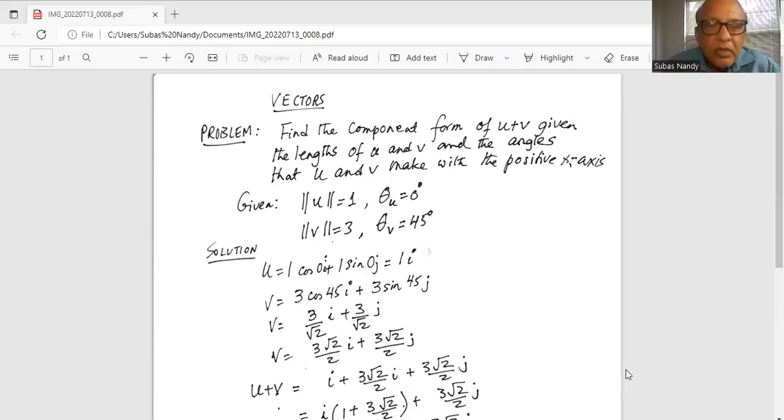So u is 1 times cosine 0 degrees i plus 1 sine 0 degrees j, which is equal to 1i because cosine of 0 is 1 and sine of 0 is 0.